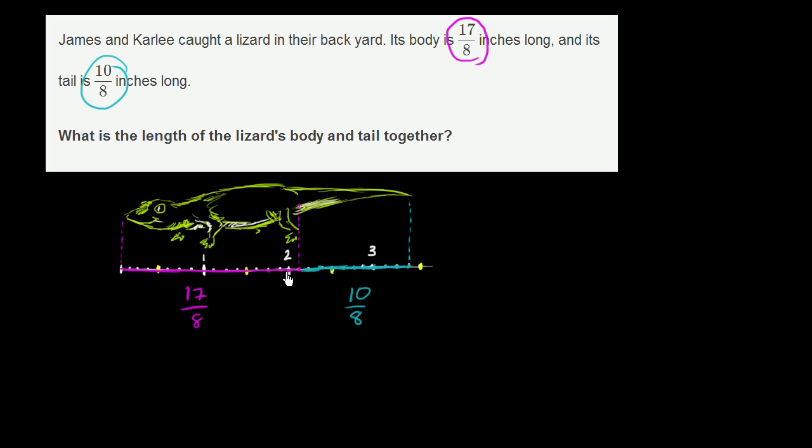Well, that's going to be the length of the body plus the length of the tail. So you have 17 eighths plus 10 eighths. That's going to get you to 17 plus 10 eighths, which is equal to 27 over 8.